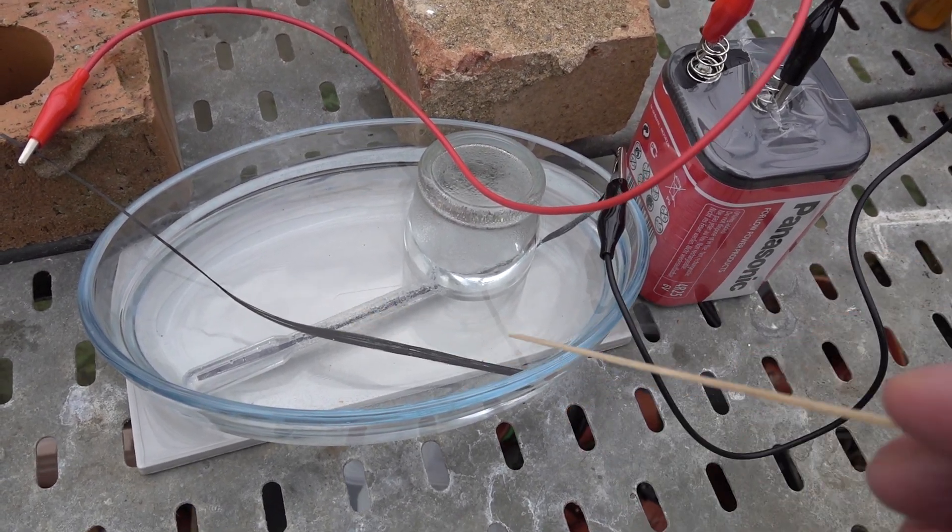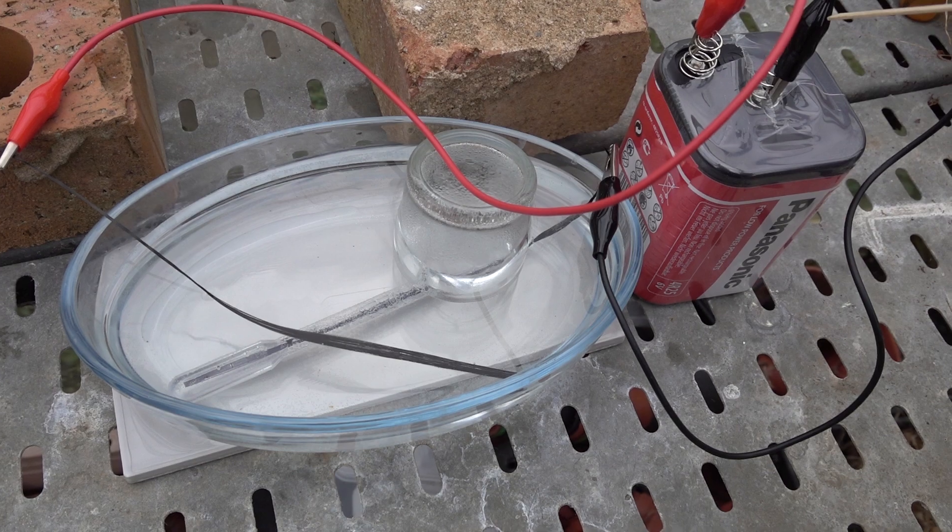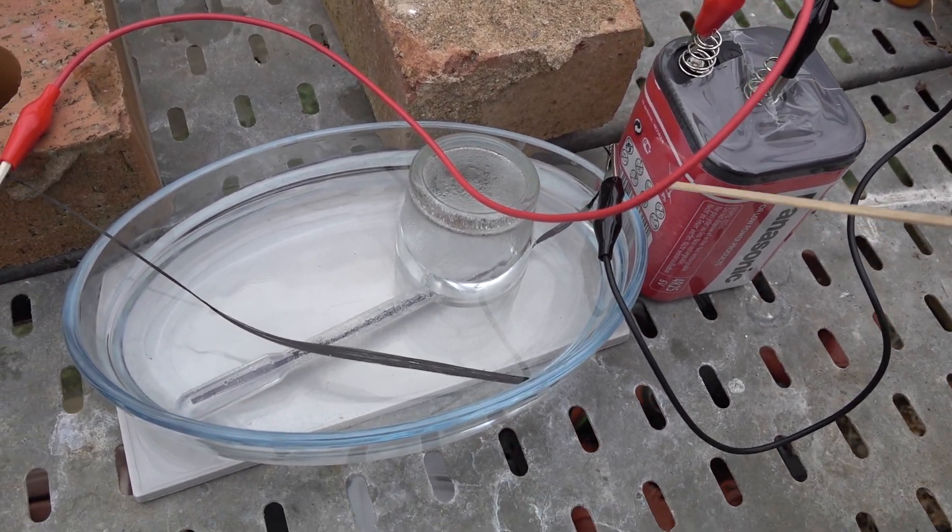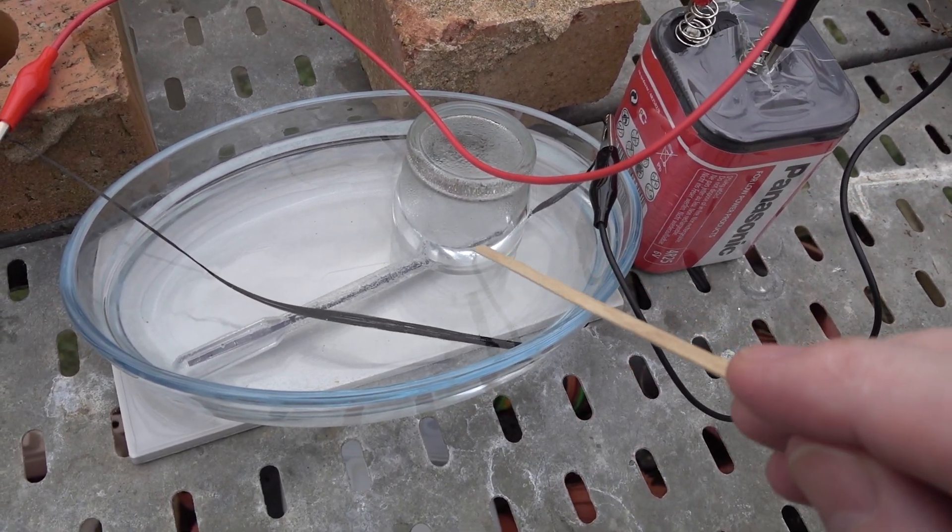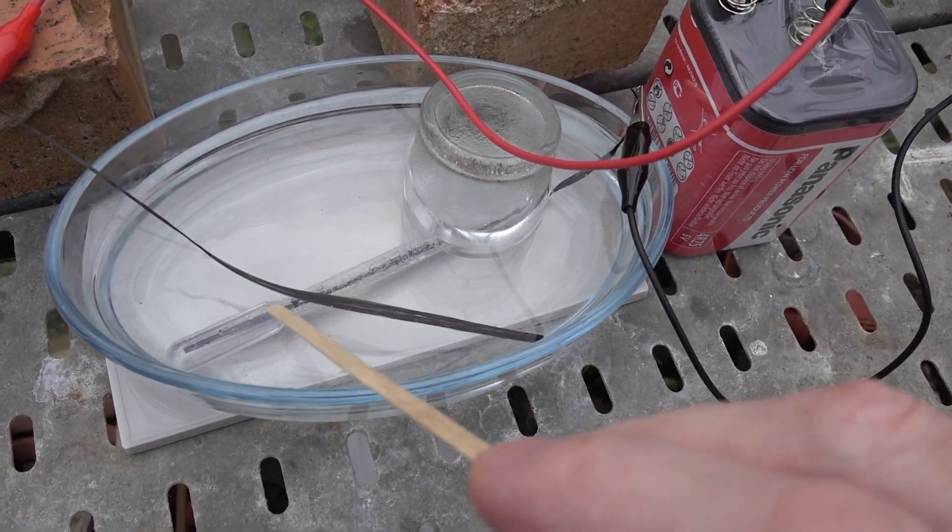We've got two carbon electrodes, the one attached to the negative terminal on the battery, the cathode, runs the length of this submerged plastic pipette.